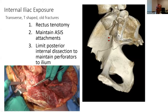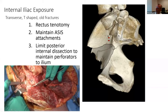With the reflected head cut and the direct head released, you can elevate all the way down to the psoas gutter under the iliopectineal eminence, gaining internal access all the way back to the greater notch and to the edge of the pelvic brim. Limiting dissection in this area avoids disrupting the important perforators into the ilium that can result in devascularization.